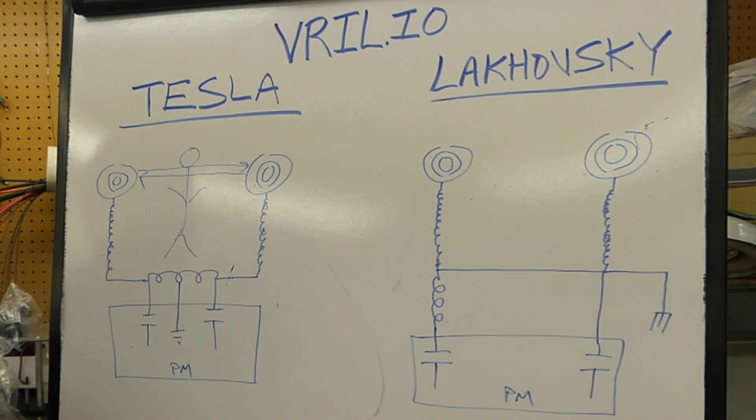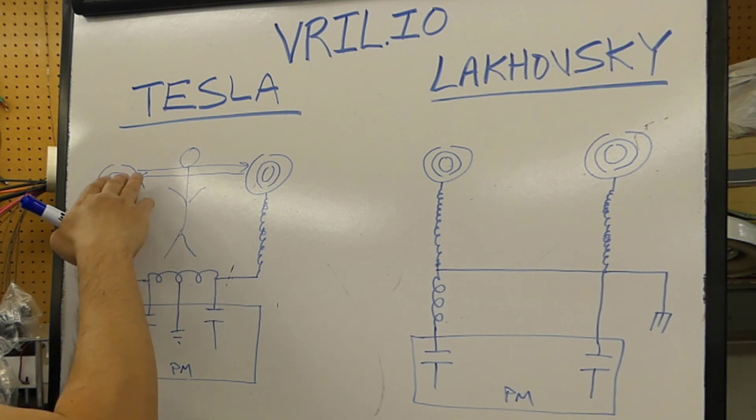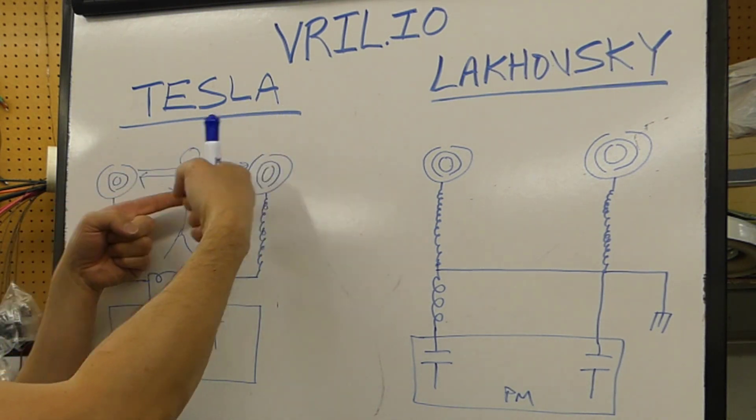There's a displacement current here, which is different from conduction current. These are basically longitudinal waves, so to speak, or longitudinal impulses that are going back and forth.